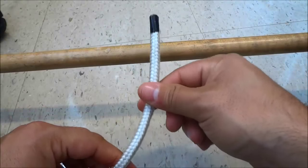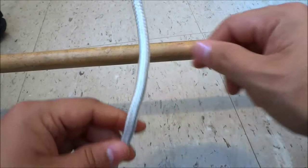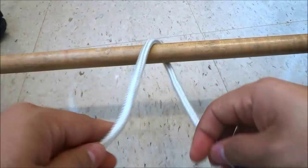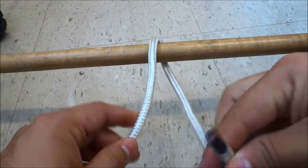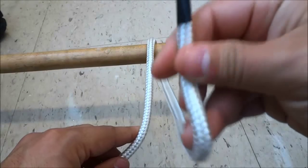So the first step is to get the end of the rope and bring it over the piece of wood and then under the piece of wood just like that. And make sure that you have a decent amount of slack.